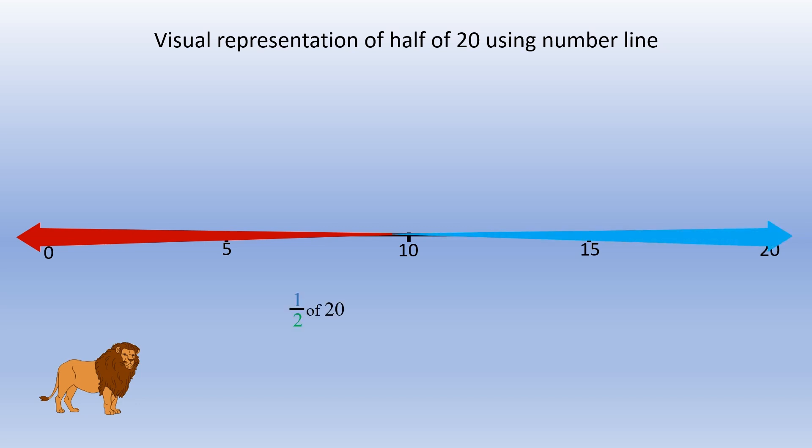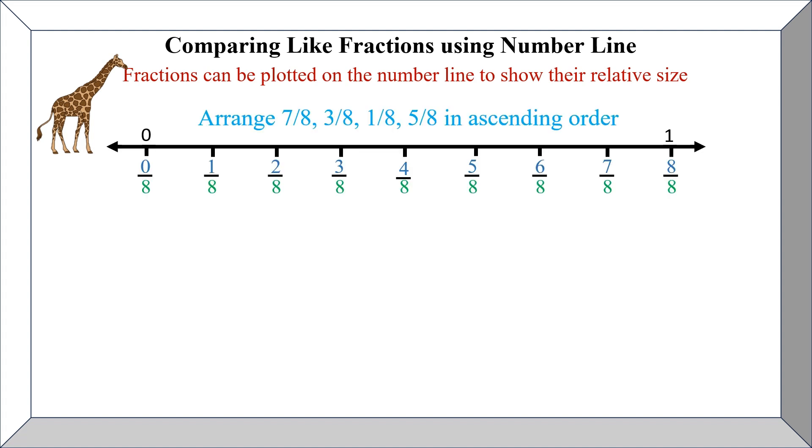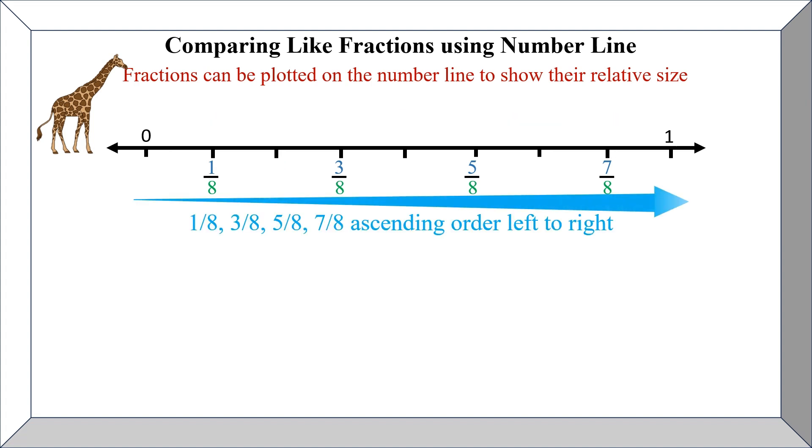Then comparing like fractions using number line. Fractions can be plotted on the number line to show their relative size. So here the question is arrange 7 by 8, 3 by 8, 1 by 8, and 5 by 8 in ascending order. So on the number line we are dividing it into 8 equal parts and you can visualize which is greater and which is smaller. Here I am drawing one more number line, and we know that 1 by 8, 3 by 8, 5 by 8, 7 by 8 are in ascending order from left to right.